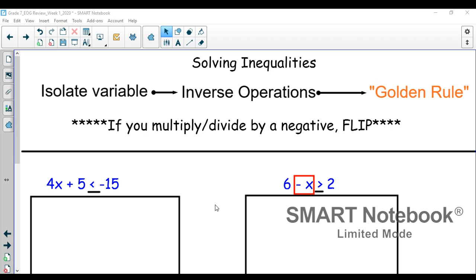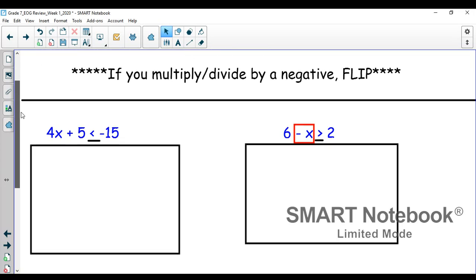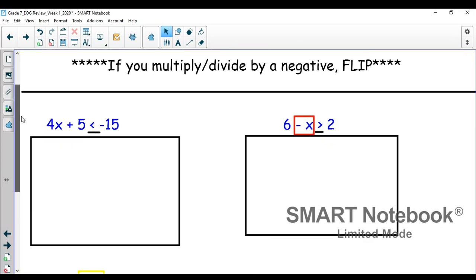All right, so the last part of inequalities for today is actually solving inequalities. You solve inequalities the same way you solve two-step equations. However, there's one difference. When you multiply or divide by a negative number, you must flip the sign.